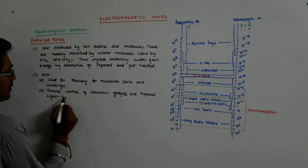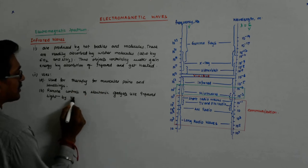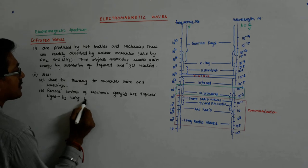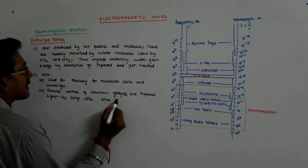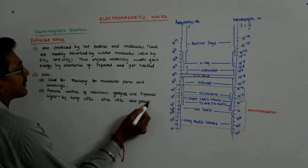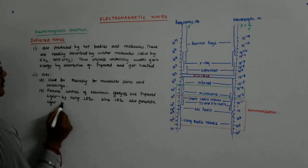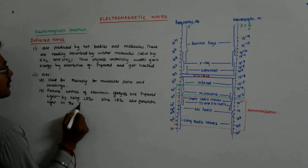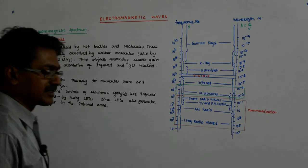Remote controls of electronic gadgets use infrared lights by using LEDs, since LEDs also generate infrared light in the infrared zone.